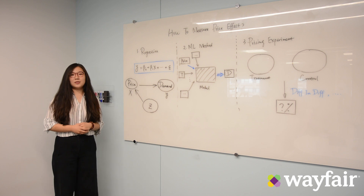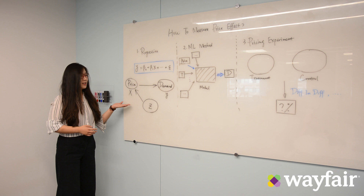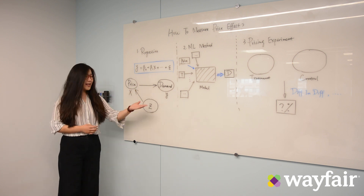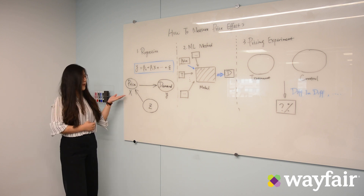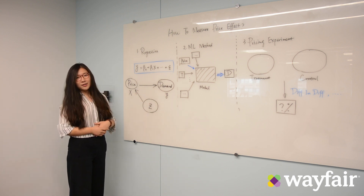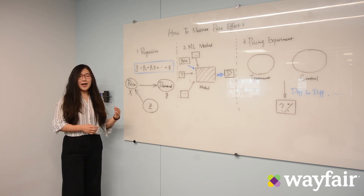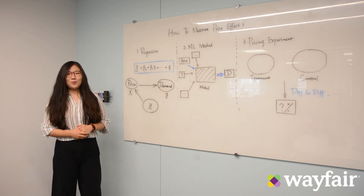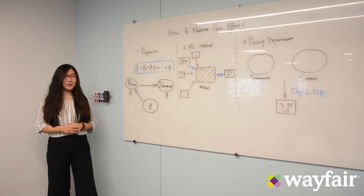That's why we can use a solution called instrumental variable. As you can see in this little graph, price will of course impact our demand. We want to find a Z variable which will impact the price but doesn't have any correlation with the demand. We introduce that into our model so that we can get rid of the fact that X is correlated with other factors. This is a very smart way to solve this problem, but it's usually very hard to find a good instrumental variable.